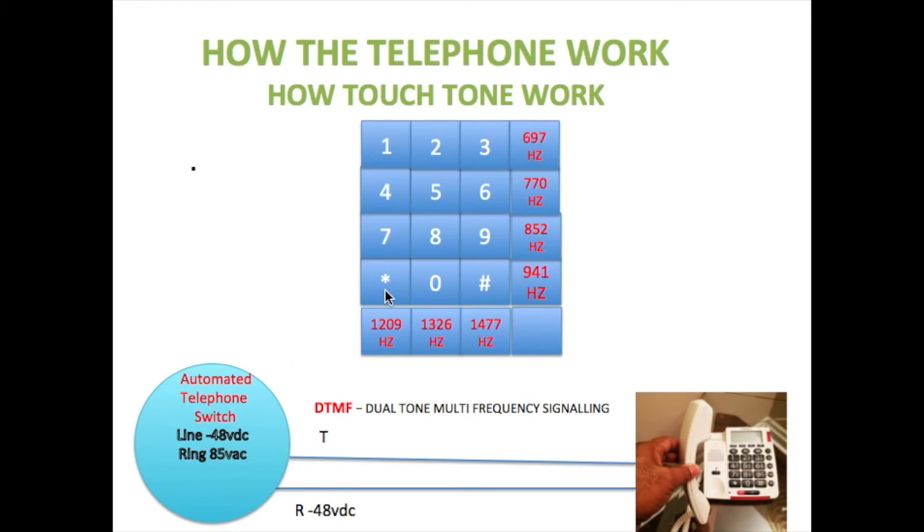Let's say the next number to be dialed was nine. That would generate two frequencies again: 852 Hertz and 1477 Hertz. These two frequencies are sent back to the switch and the switch will decode these two frequencies as being the number nine and then it will store the number nine in its memory awaiting for the next number to be dialed.